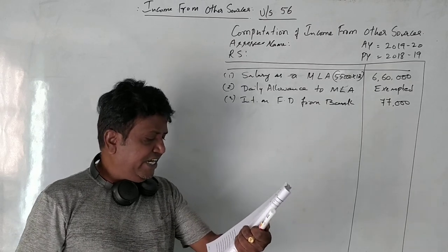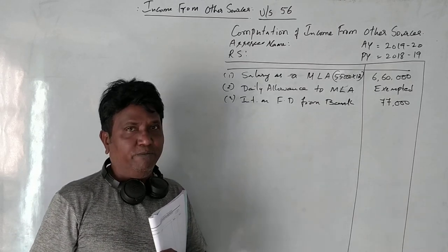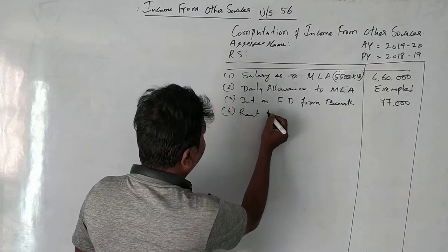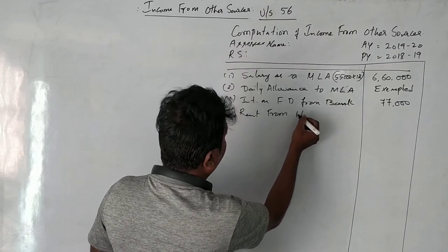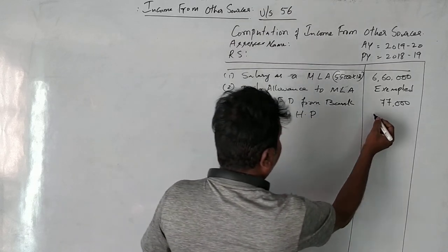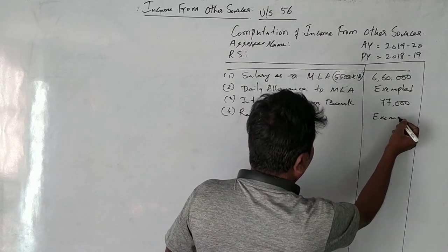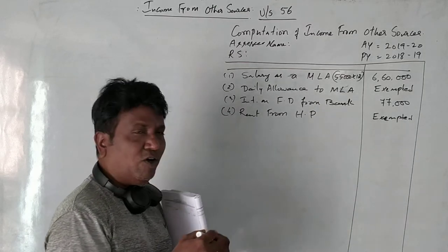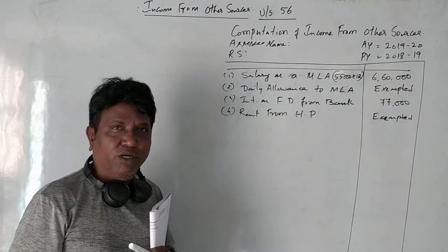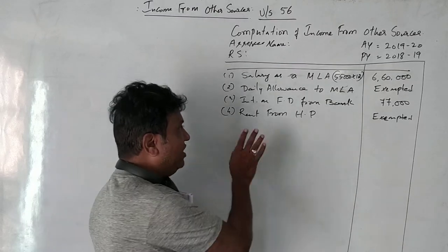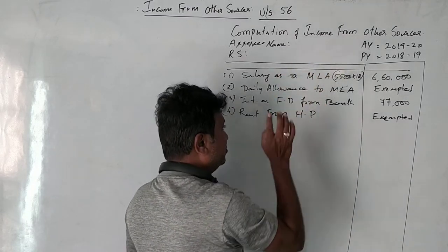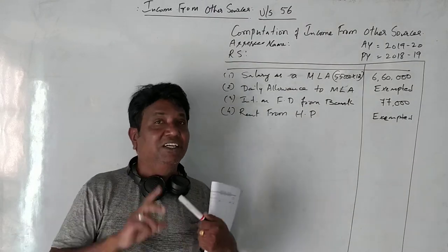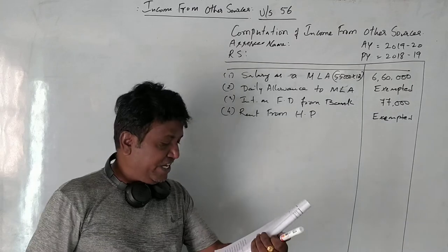Next is rent from house property in Bangalore: 20,000 per month. This is an income, but income from house property is not taxable under the head income from other sources — it is taxable under the head income from house property. Therefore, here we mark it as exempted under this head.